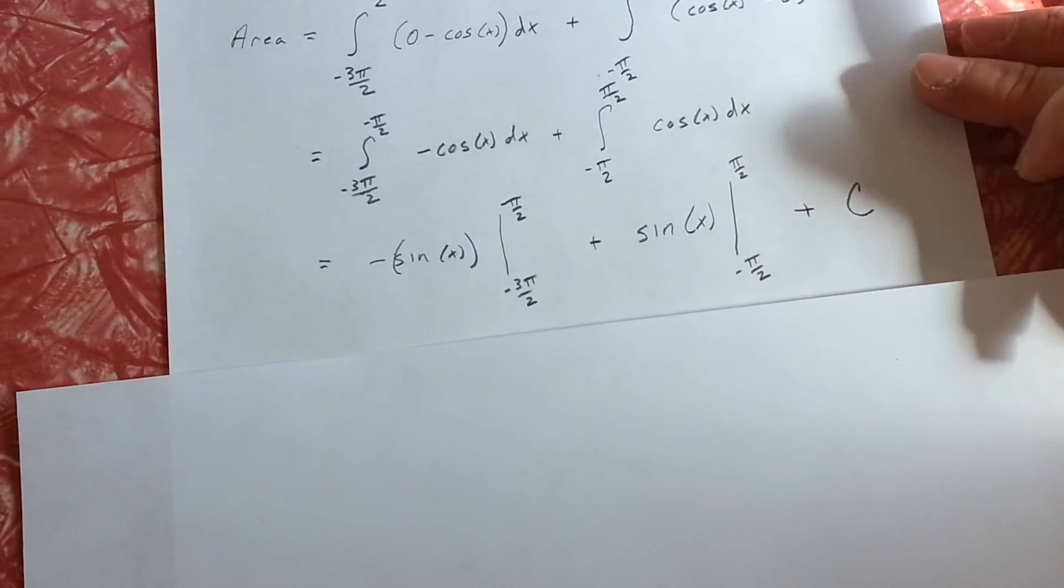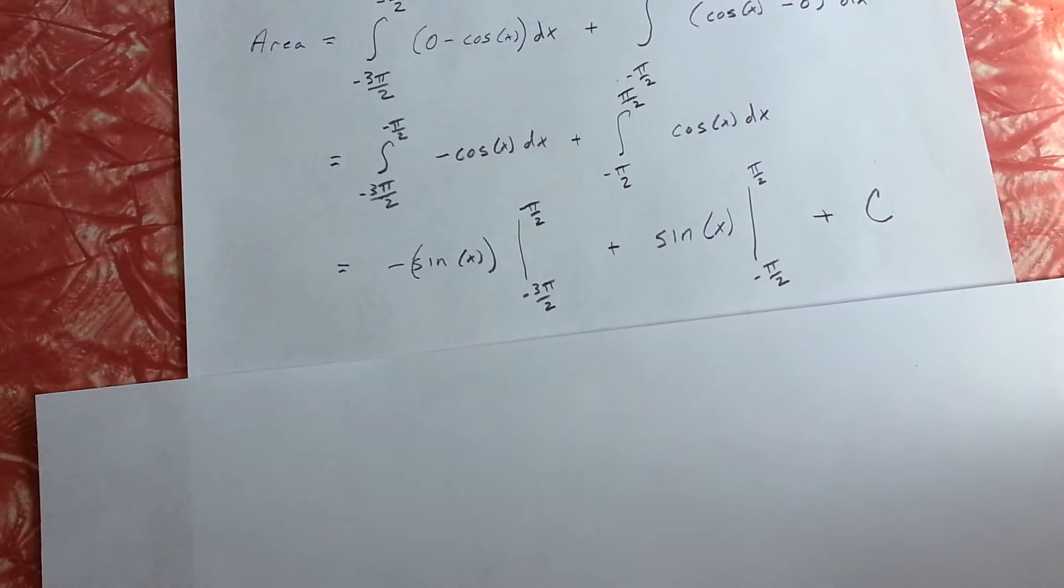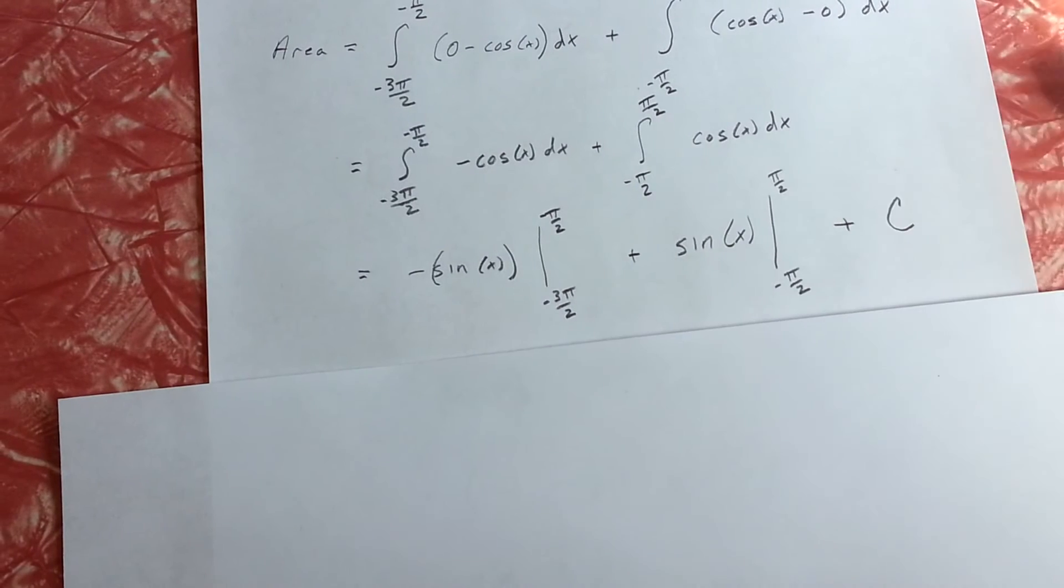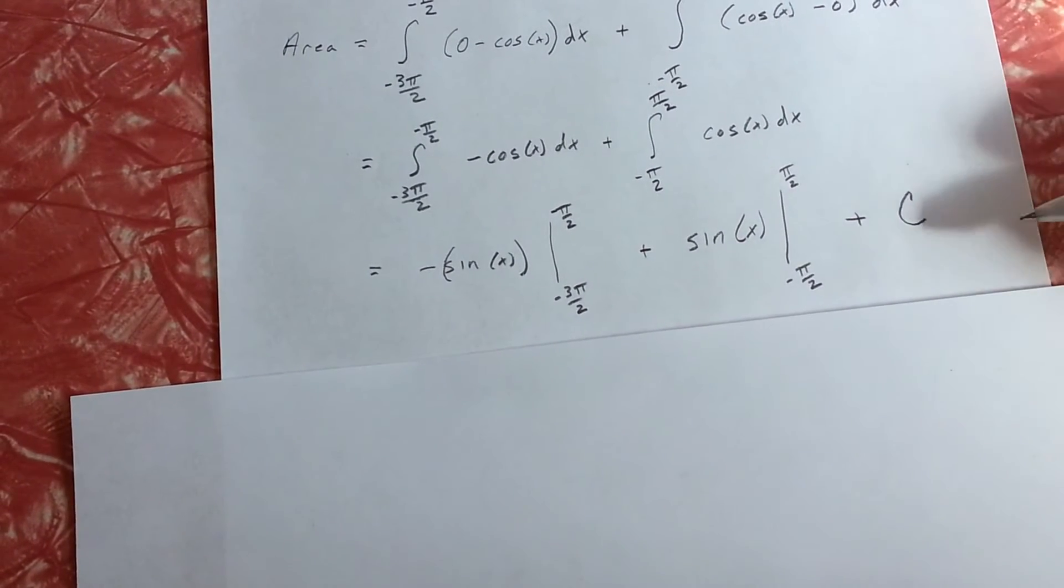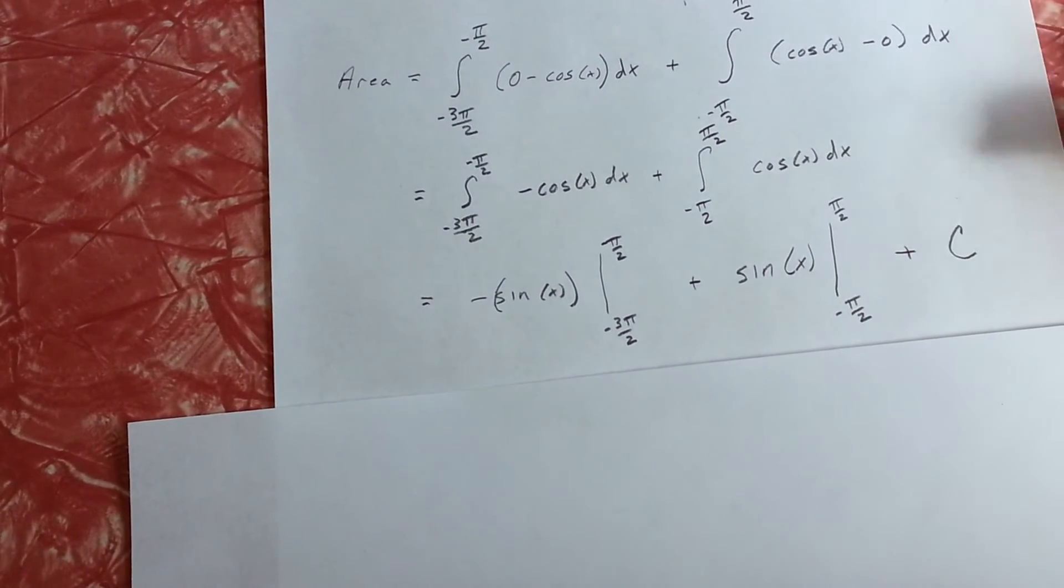Finding the antiderivatives, we get negative sine of x between negative 3 pi over 2 and negative pi over 2, plus sine of x between negative pi over 2 and pi over 2, plus the constant.